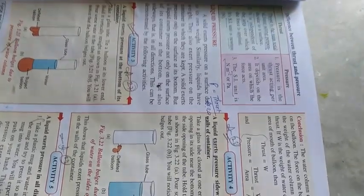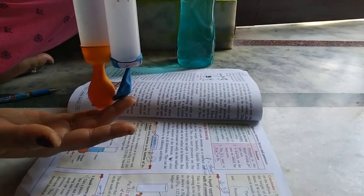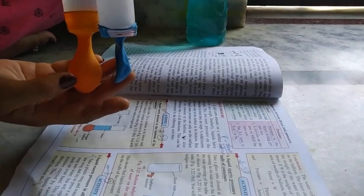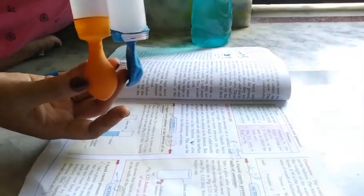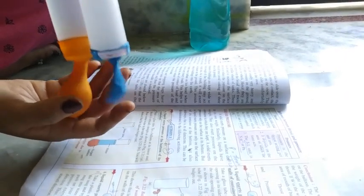We take two test tubes, fill them with water, and observe the balloon at the bottom. The balloon filled with water bulges out, while the other deflated balloon does not. The conclusion is that the water column exerts a pressure on the balloon. The force on the balloon is equal to its weight, and this force is called thrust.